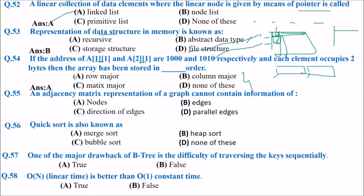Adjacency matrix representation of a graph cannot contain information about parallel edges. There are two ways to represent a graph: adjacency matrix and adjacency list. The adjacency matrix cannot represent parallel edges — that is the answer. Quick sort is also known by its own name; the answer is none of these alternatives.